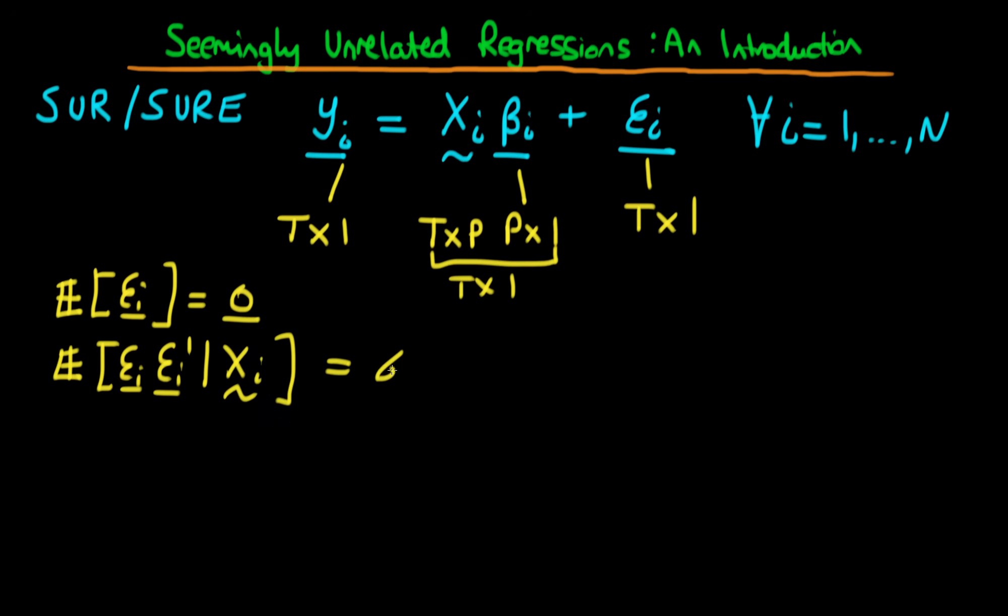sigma_i squared times the identity matrix, where the identity matrix here I'm gonna write a subscript T to indicate that this is a T by T identity matrix. So notice that within each individual, we have assumed that we have no heteroskedasticity, and we also assume that within each individual, there is no serial correlation amongst errors.